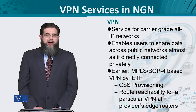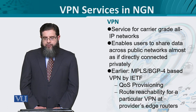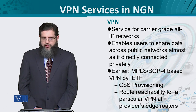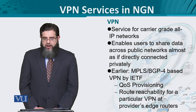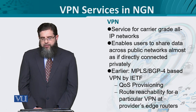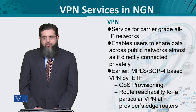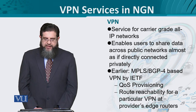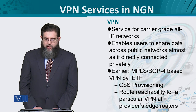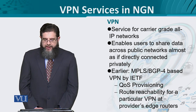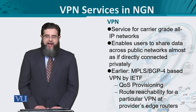As far as border gateway protocol version 4 is concerned, like its predecessors, route reachability is a requirement. But BGP version 4 particularly emphasizes classless inter-domain routing for identifying the endpoints at the provider's edge routers.